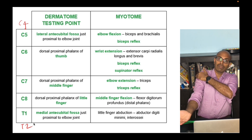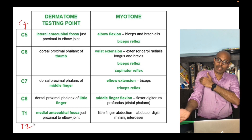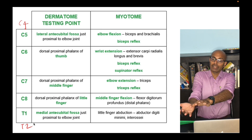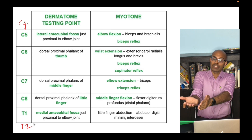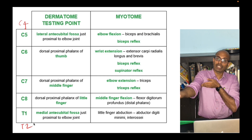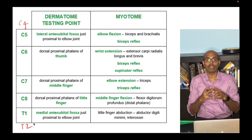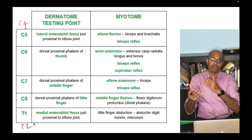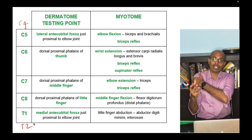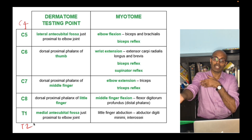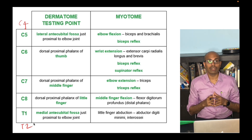To recap: C5 is the upper lateral portion of the shoulder, C6 is the lateral forearm and thumb, C7 is the middle finger, C8 is the little finger and medial forearm, and T1 is the medial portion of the arm. The dermatomal distribution starts from the lateral side of the arm, goes down, and then comes back to the medial side — from C5 to T1.